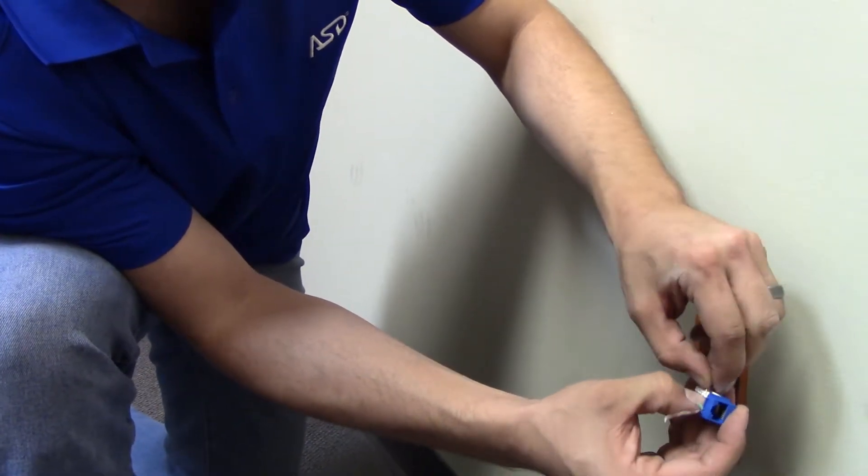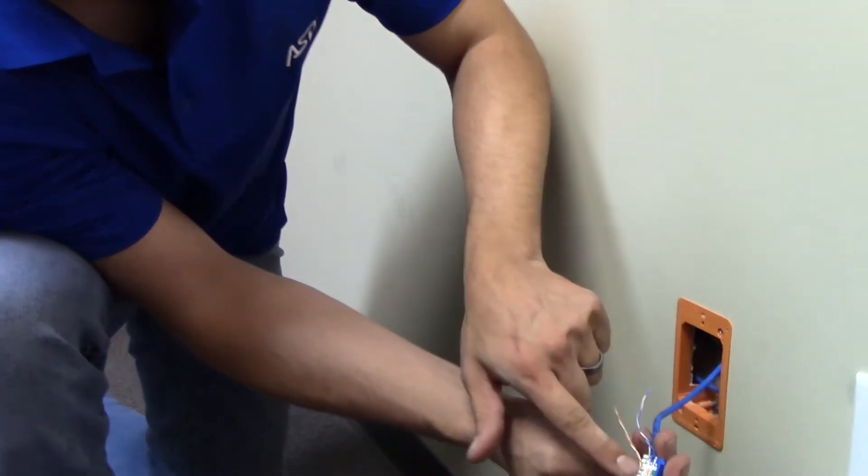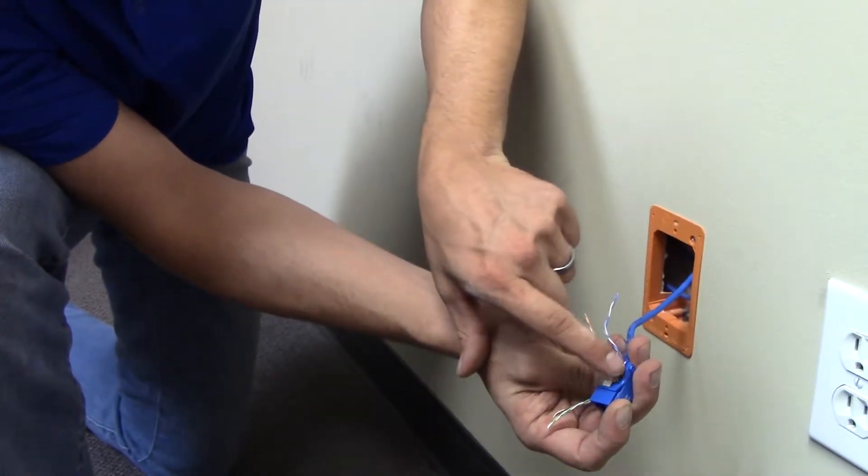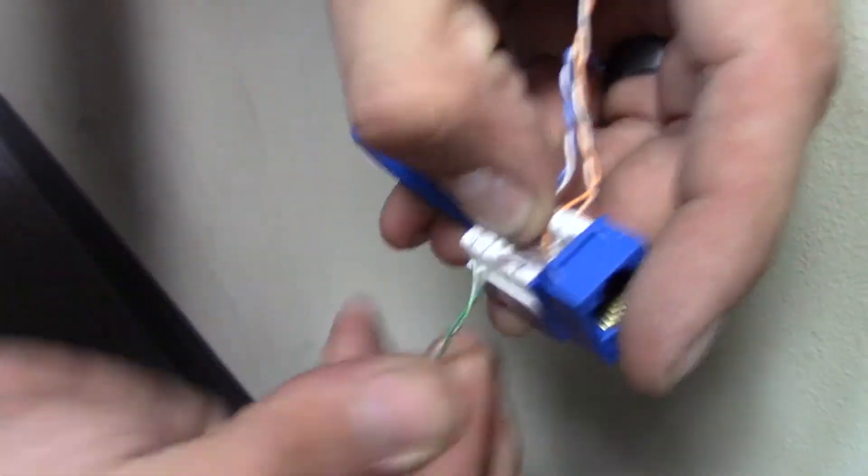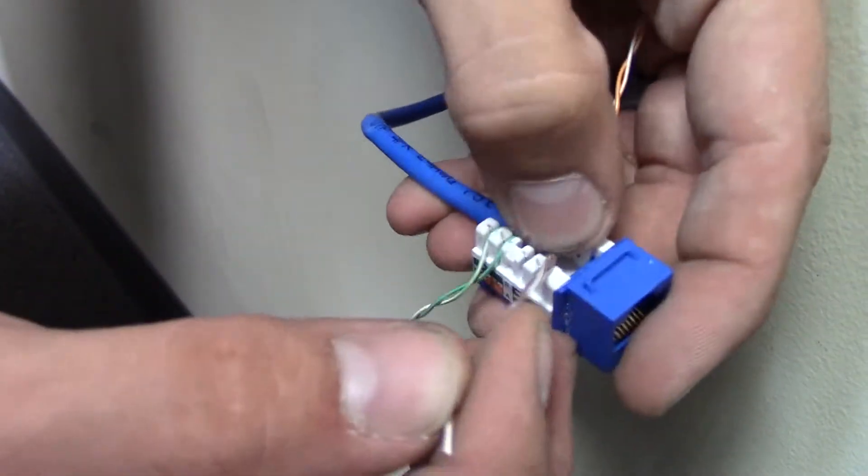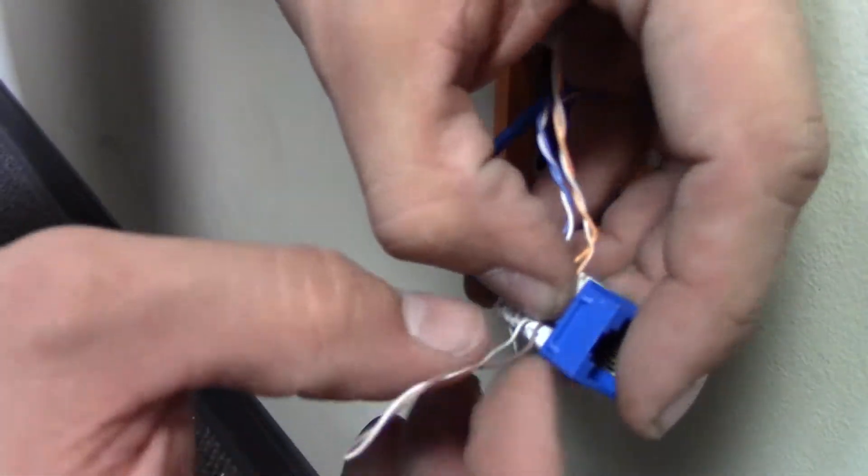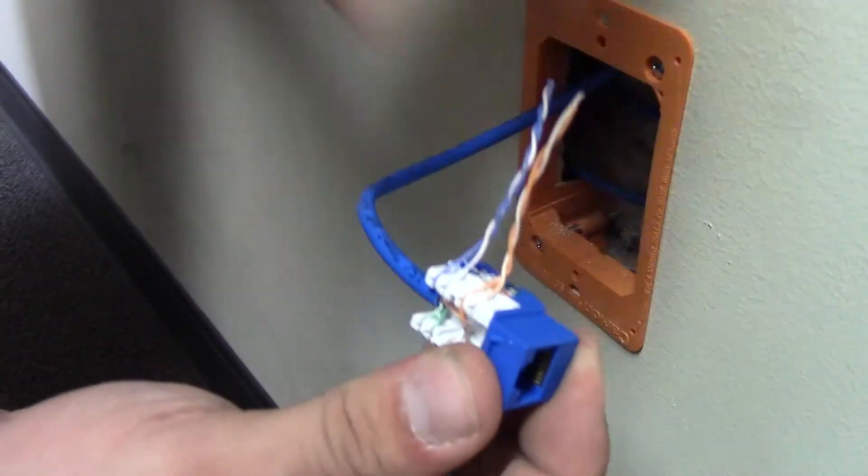Make sure the white and the solid colors are where they notate on the sides. See, I've got the white here and the white here because the white's on that part of the color code. Untwisting as little as possible. The more untwist you do, the more bandwidth that's lost and thus a slower internet speed.